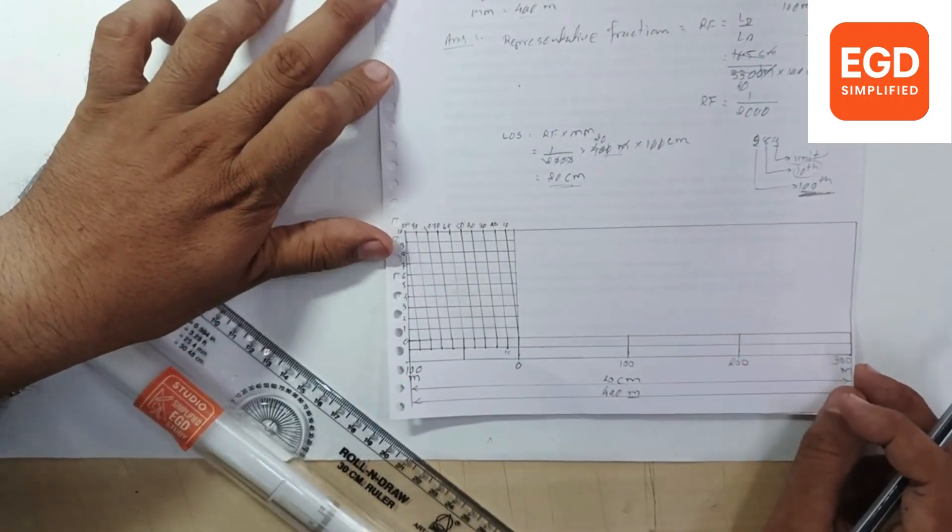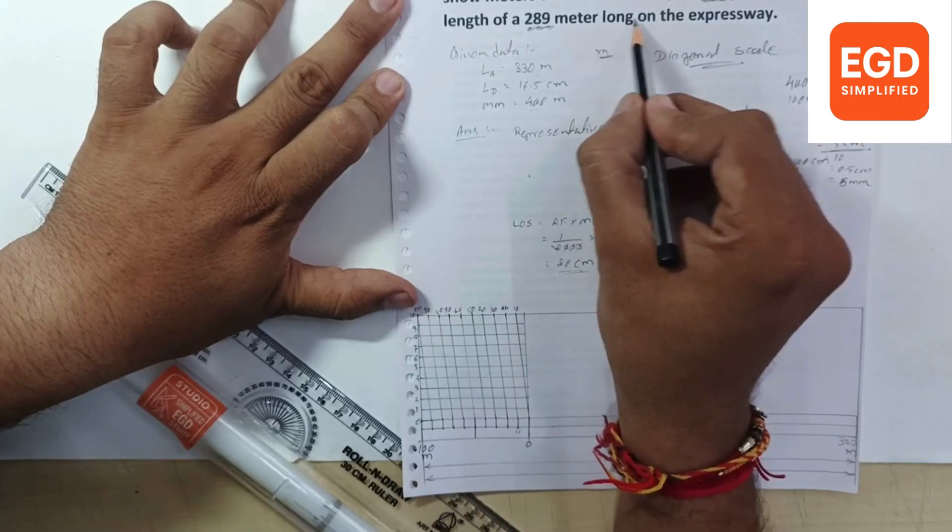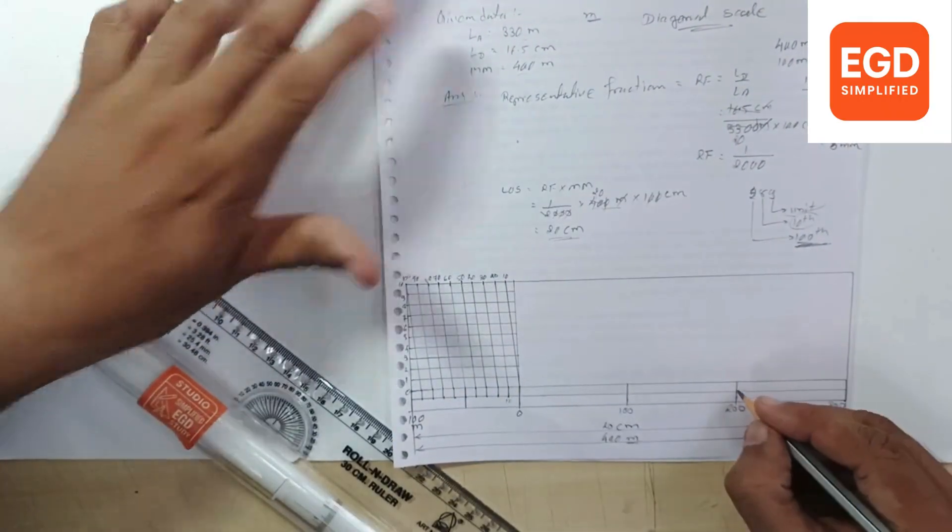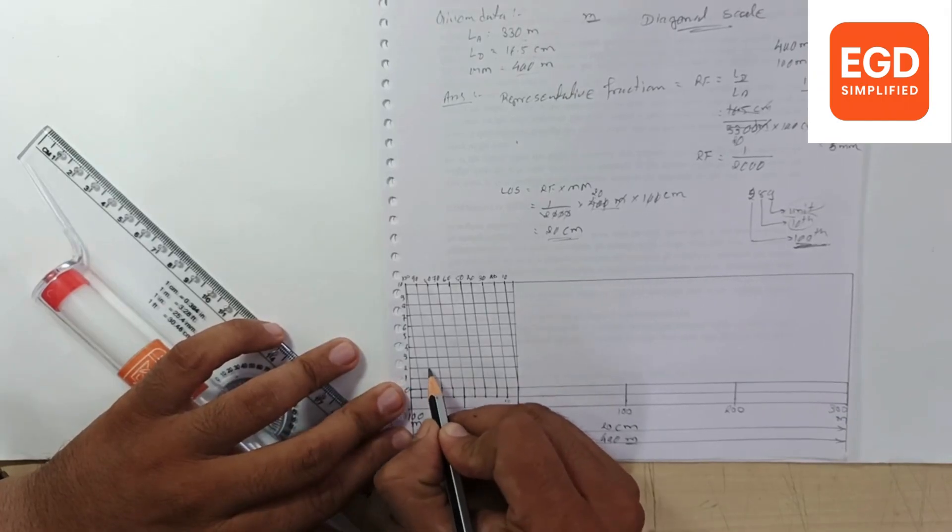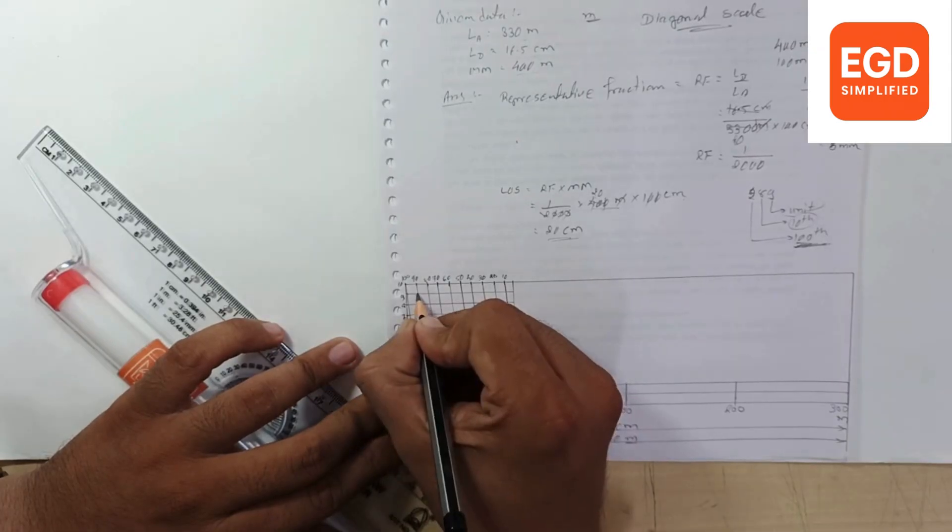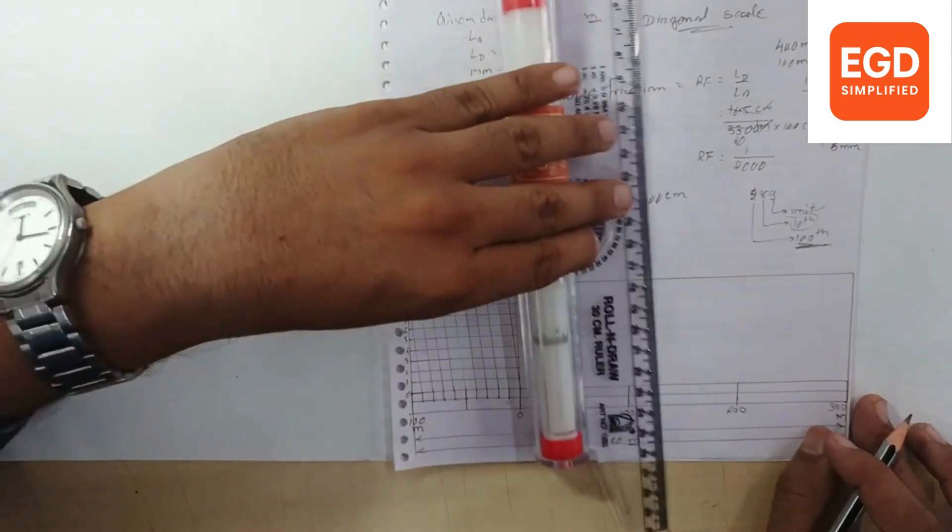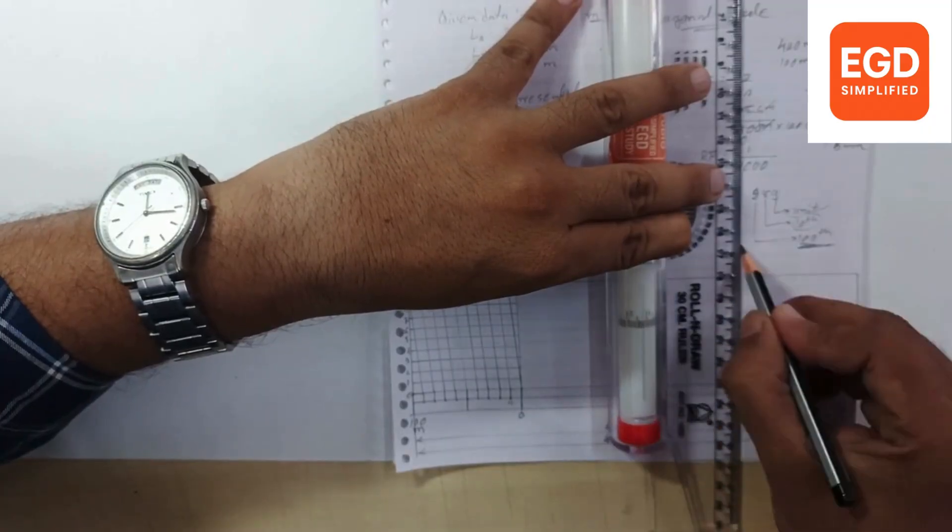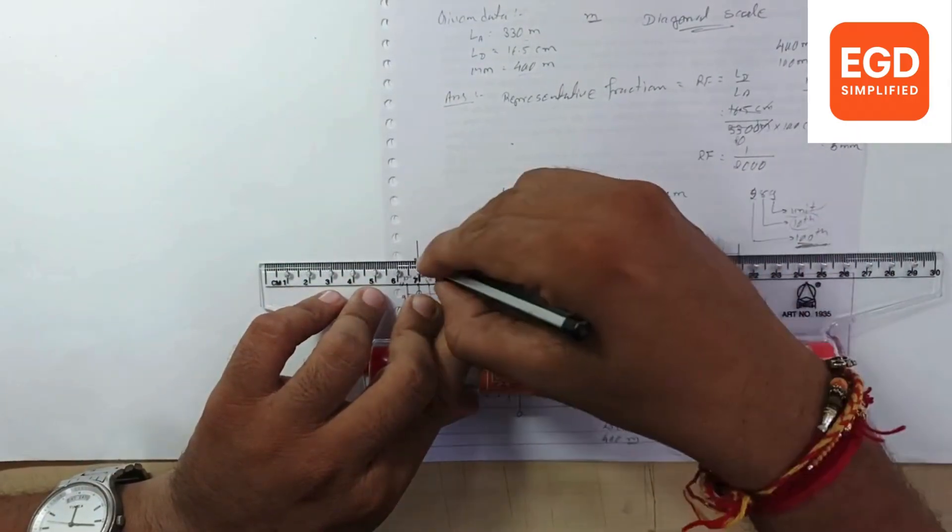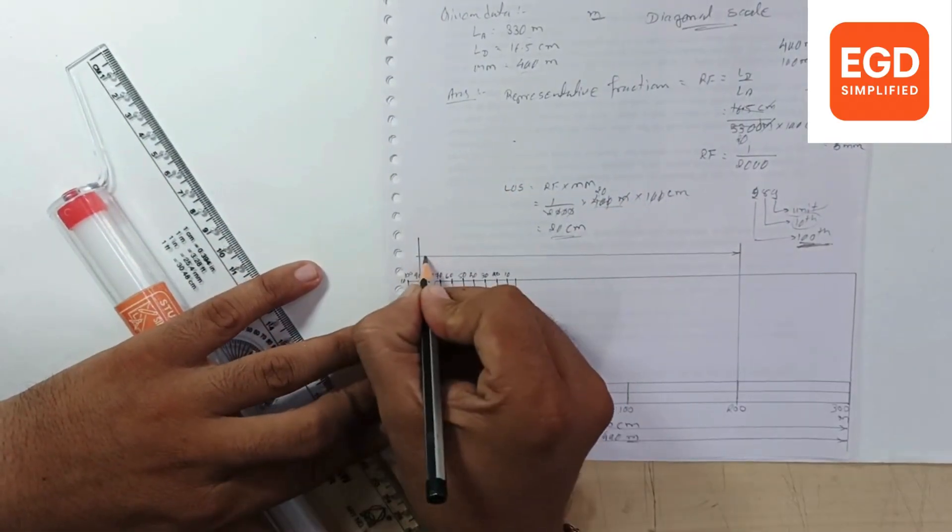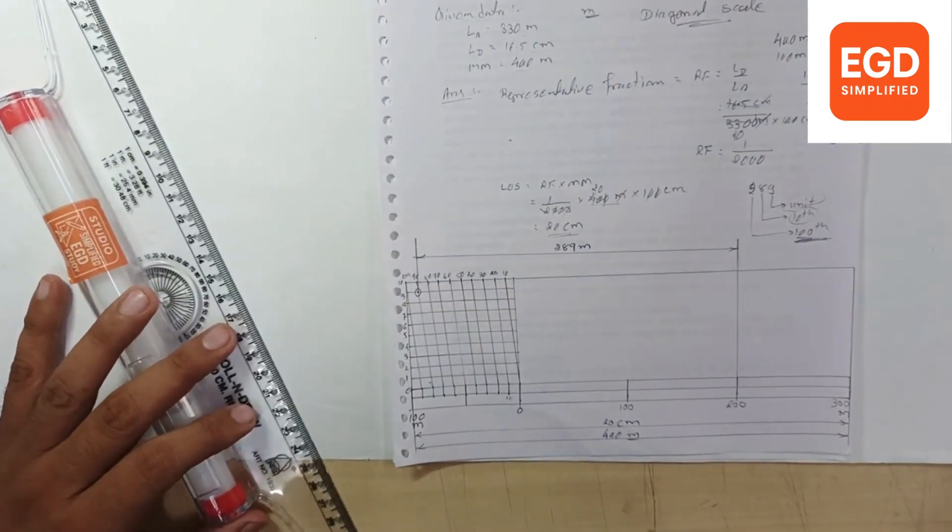Diagonal scale is ready. Now what we need to plot? Show the length of 289 meters on the expressway. 289: so 200, and 80 and 9. This is 200. Draw a straight line. Give dimension arrow, should be long and thin. 289 meters.